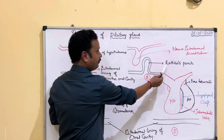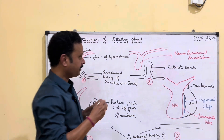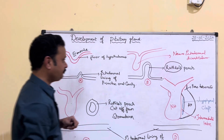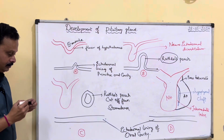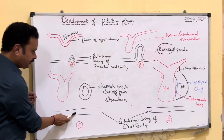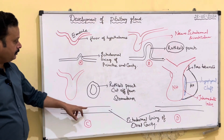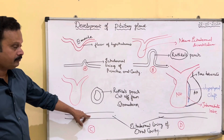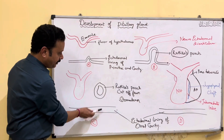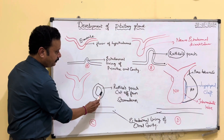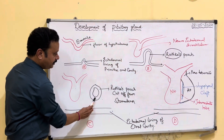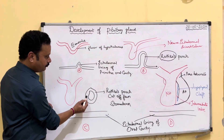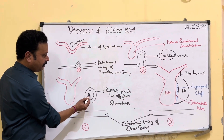This forms a pouch called Rathke's pouch, which eventually detaches from the oral cavity or stomodeum, gets separated from it, and this pouch has an anterior wall, posterior wall, and a cleft.